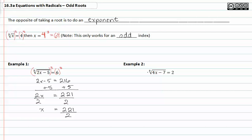In example two, we first should notice that the index on the root is an odd index. So we want to perform the opposite operation, which would be raising it to the fifth power, and whatever we do to one side of the equation we must do to the other.